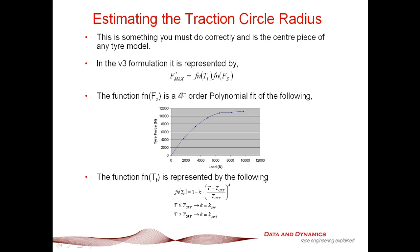In terms of the function of tire temperature, a very useful function we found is: f(T) = 1 minus K times (T minus T-optimum) on T-optimum squared, where T-optimum is all in Kelvin. Where T is less than T-optimum, K is the pre-slope, and where T is greater than T-optimum, K is the post-slope. This lets us represent what the tire is doing as the tire temps build up before the optimum temperature and as they drop away.